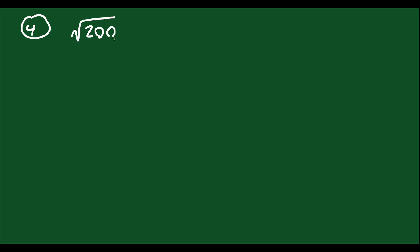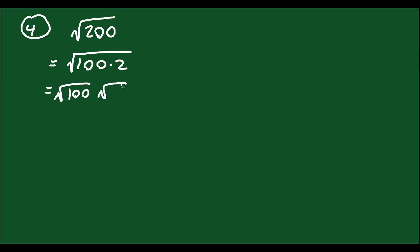Number 4: square root of 200. There are multiple ways to split up 200, but we want two numbers where one is a perfect square — and it should be the biggest square possible. So 100 times 2 works, because we can take the square root of 100, which is 10. So you get 10√2, and that's the simplified version.